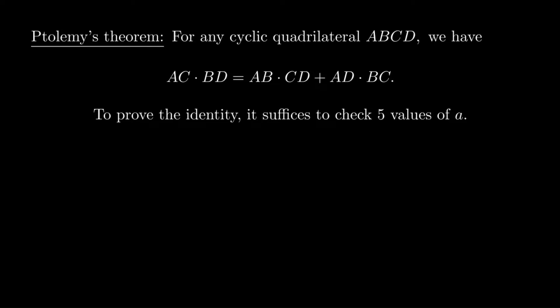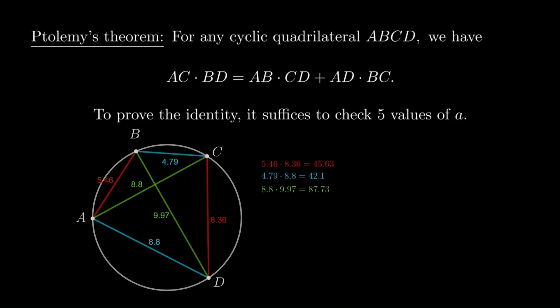There are a few points where it's really easy to check that the identity is true. One of them is from letting a equal b, or to phrase it more rigorously, we're taking the limit as a approaches b. Then the product of AB and CD goes to zero, and we're left with just comparing the blue and the green products, and those will be equal in the limit. Then we can do the same thing where a approaches d, and we'll end up with a degenerate case and the identity holds.